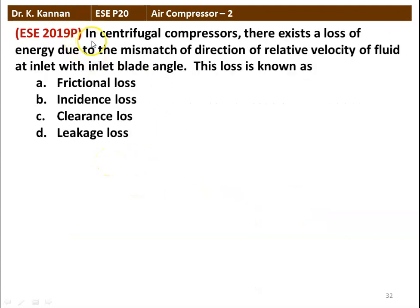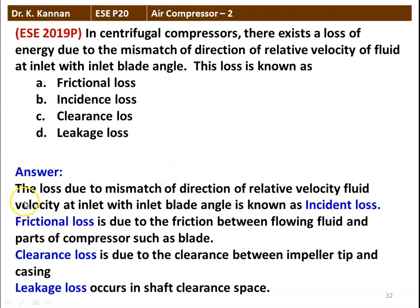The next question is from the 2019 question paper. In a centrifugal compressor, there exists a loss of energy due to mismatch of direction of relative velocity of the fluid at the inlet with the inlet blade angle. The loss is known as frictional loss, incident loss, clearance loss, or leakage loss. The correct answer is incident loss, because it arises from the mismatch of the direction of relative velocity at the inlet with the blade angle. Frictional loss is due to friction between fluid and blade; clearance loss is due to the gap between impeller tip and casing.